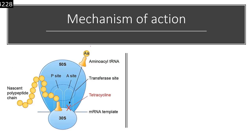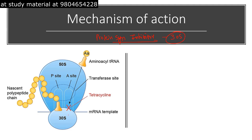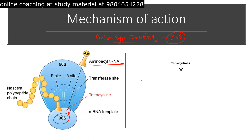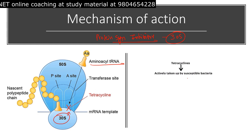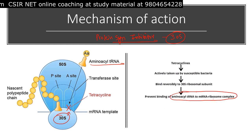Tetracycline's mechanism of action — it is a 30s ribosomal subunit binder, making it a bacterial protein synthesis inhibitor. It binds to the 30s ribosomal subunit and prevents the binding of aminoacyl tRNA to the mRNA-ribosome complex, thus blocking the addition of new amino acids to the growing polypeptide chain.